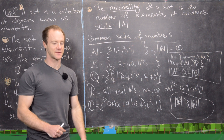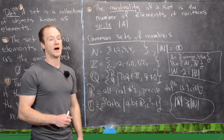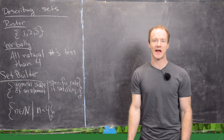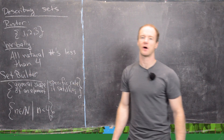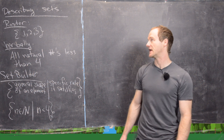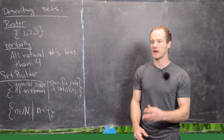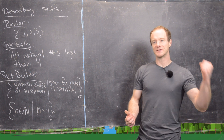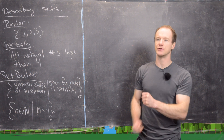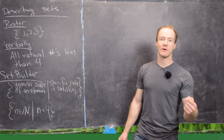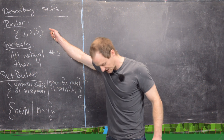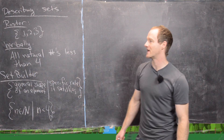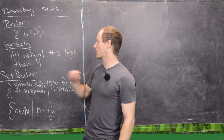Now I want to discuss set builder notation. First, let's describe three methods for describing sets. The roster strategy simply lists all elements — for example, {1, 2, 3}. This works for infinite sets too if there's a clear pattern; for instance, the integers written as {..., -2, -1, 0, 1, 2, ...}. It's pretty obvious what all the integers are from that listing.